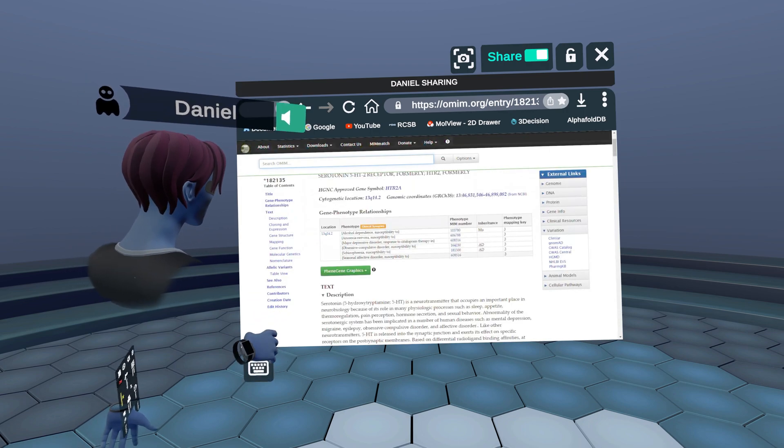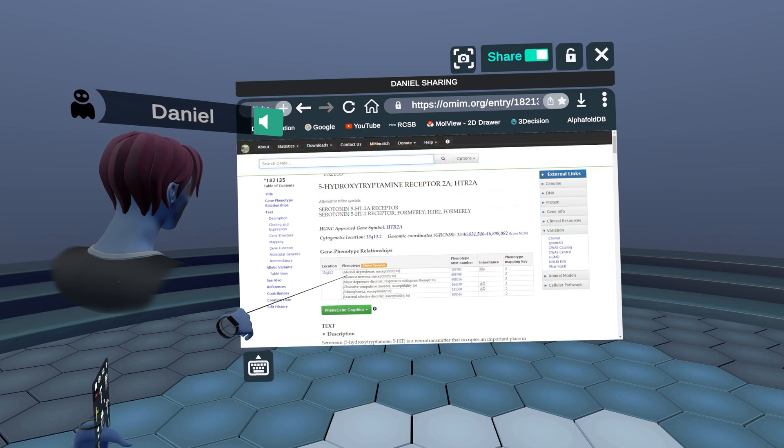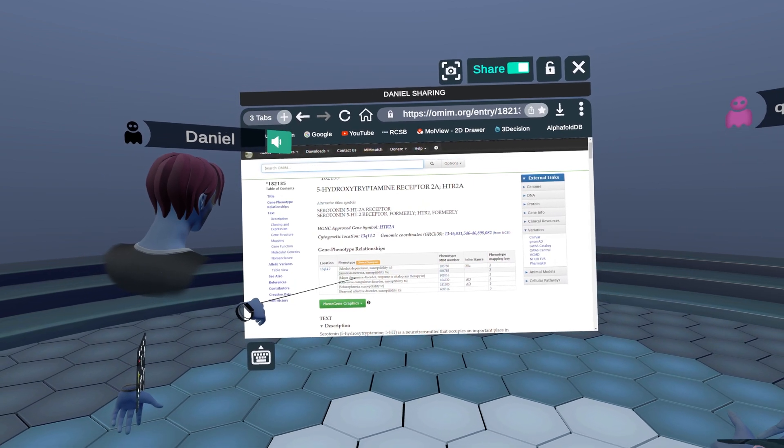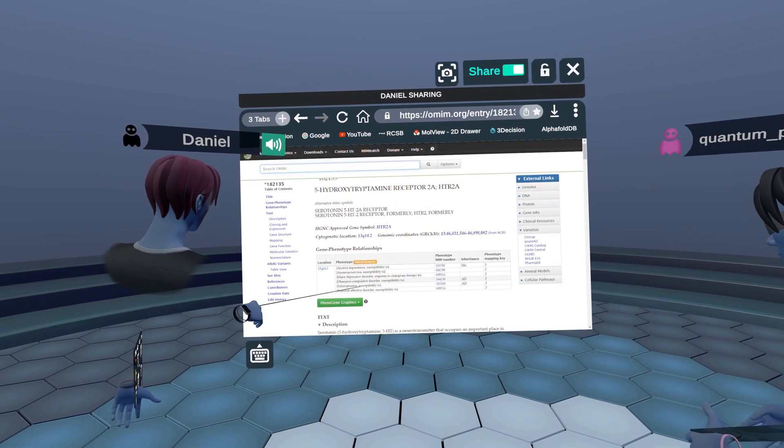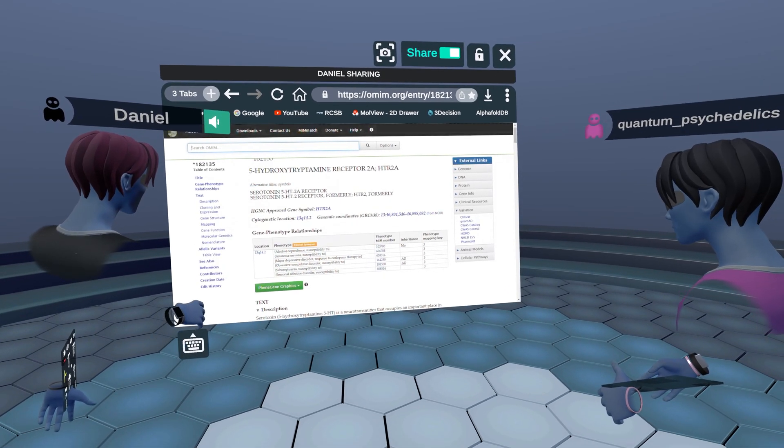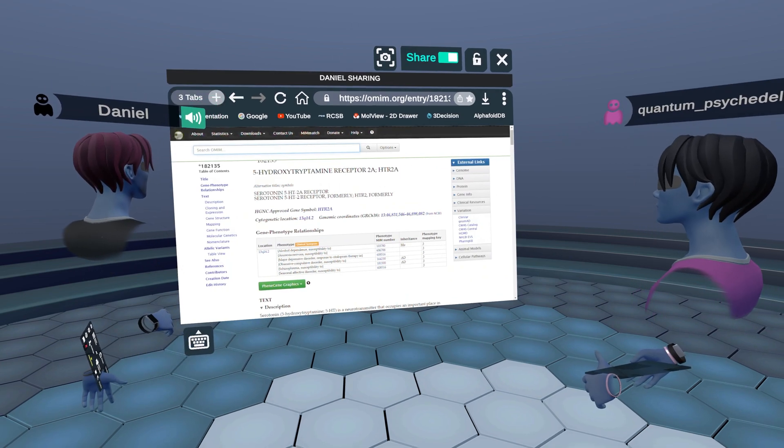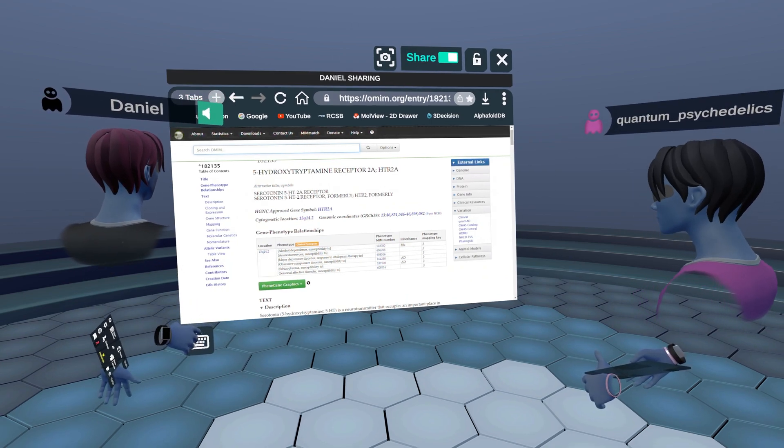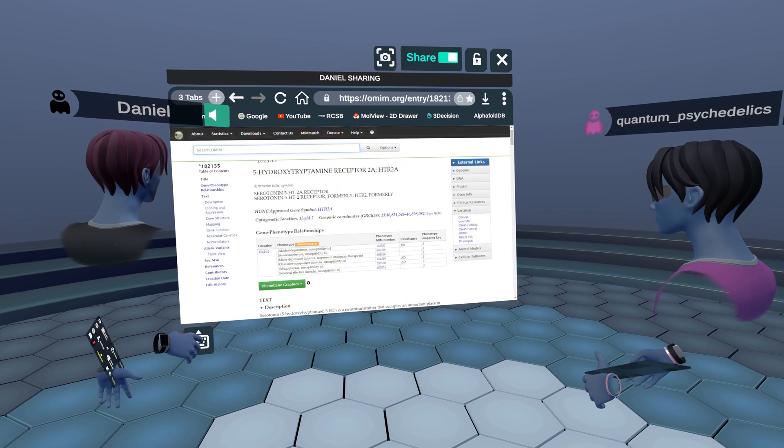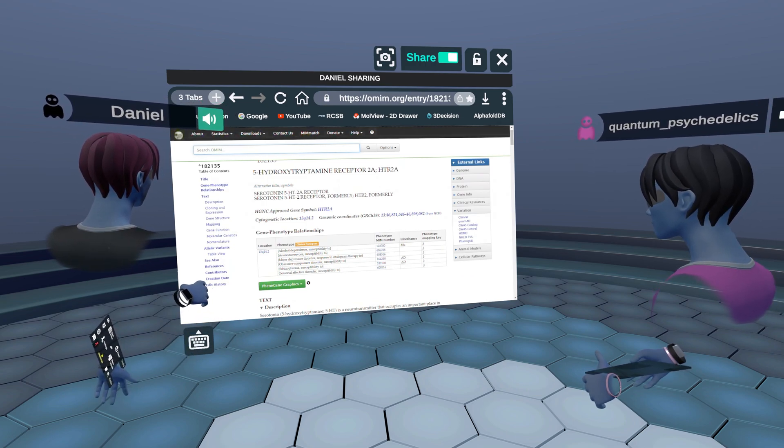And yeah, we can see here 5-HT receptor 2A. And so if I click here, we're going to see some data. And yeah, apparently this polymorphism is associated with things like alcohol dependence, anorexia, depression, schizophrenia, you know, OCD and things like that. Makes sense since it's a brain receptor, right, involved in all these processes and including psychedelic effects.